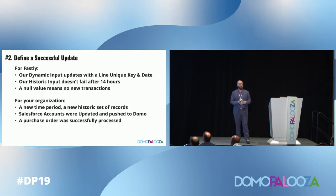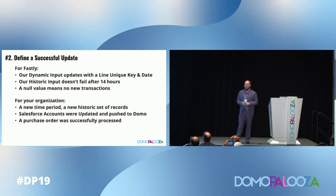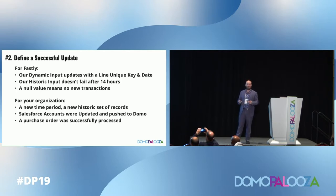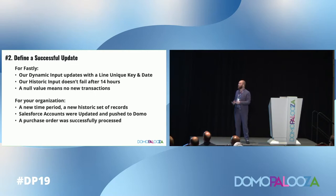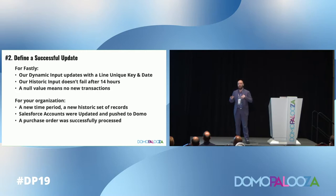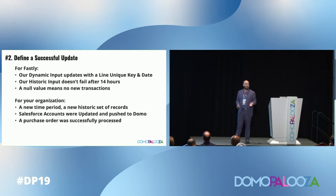Let's define what a successful update looks like. For Fastly, it was our dynamic input updates with a line unique key and date. A successful update means our historic input doesn't fail after 14 hours. Sometimes on our five-day transaction we get a null value, meaning no transactions were completed in the last five days — and that's still a successful update; if it ran and worked but no new rows were added, I want to know that. For your organization, it could be a new time period, new historic records, Salesforce accounts updated and pushed to Domo, or even a purchase order successfully processed.